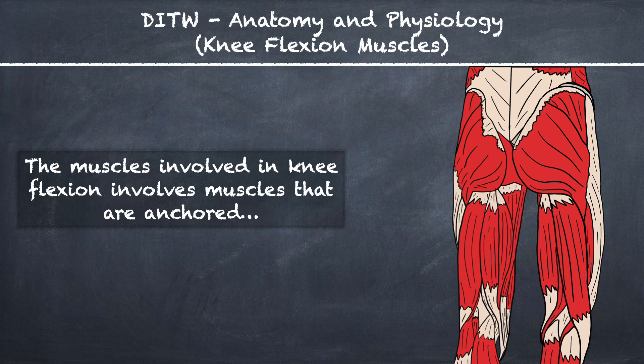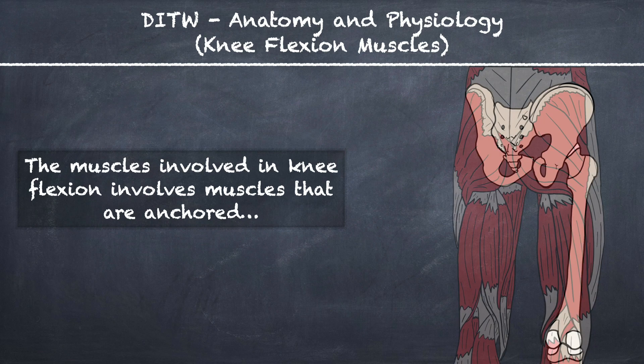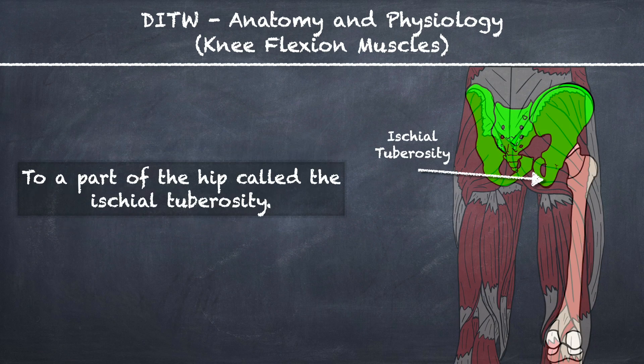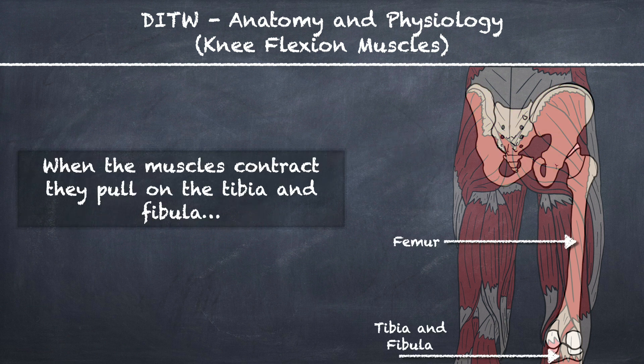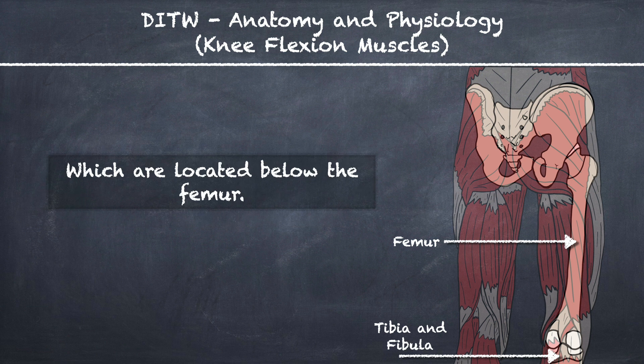The muscles involved in knee flexion are anchored to a part of the hip called the ischial tuberosity. When the muscles contract, they pull on the tibia and fibula, which are located below the femur.